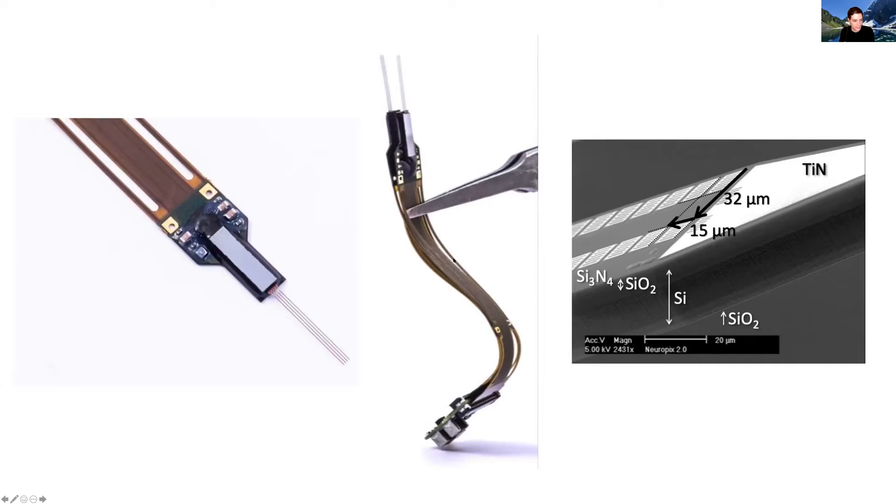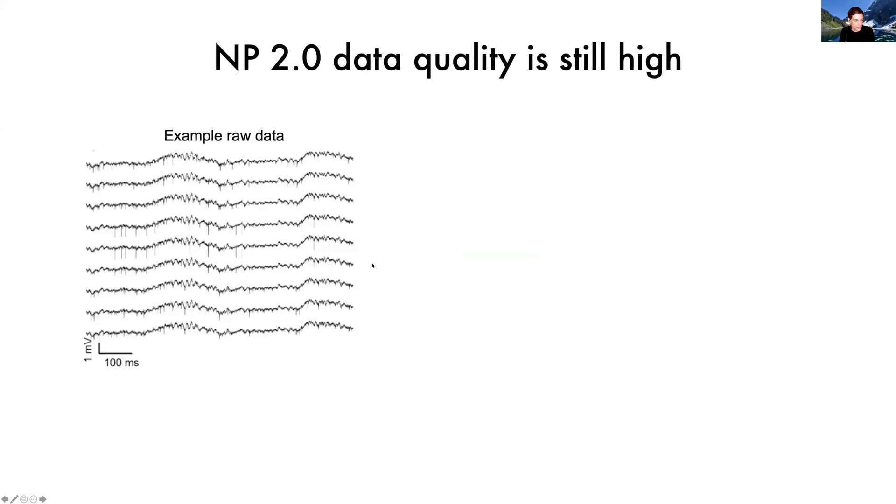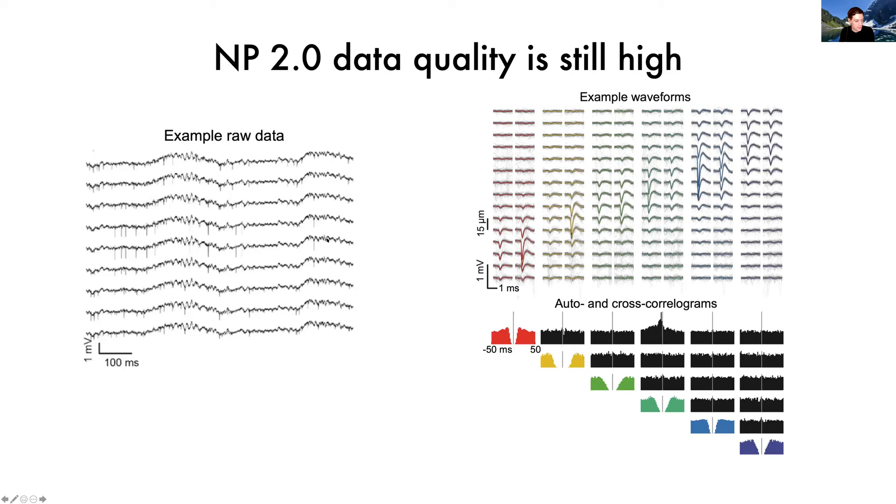One of the main points of 2.0 probes is that because they're so small and light and two of them can fit on a head stage, you have the ability to, with less than one gram of implanted hardware, this two probes plus head stage weighs about one gram. You can implant two of these probes and record 768 channels simultaneously in a freely moving mouse or in a chronically implanted mouse. The data quality is still very high. Here's just a figure from our paper where we show some raw data with local field potentials and spiking data and some isolated single neurons with high quality waveforms and isolations. So even though the probe was miniaturized, there was no appreciable change in the data quality.